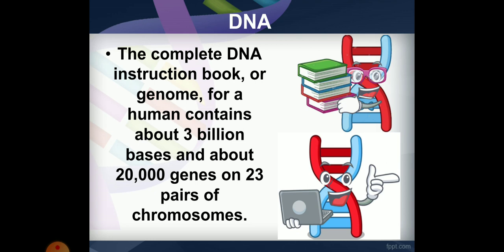These bases encode about 20,000 genes arranged in 23 pairs of chromosomes. This is the majority of information contained in DNA.